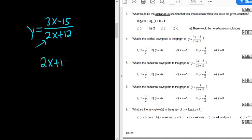So 2x plus 12 equals 0. Then you solve for x. So minus 12. We have 2x equals minus 12. Then you divide by 2. So we have x equals minus 6.